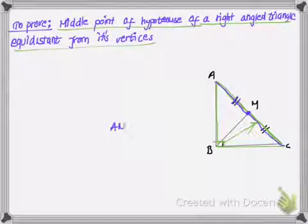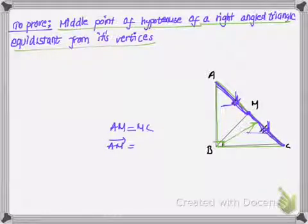So I can write AM is equal to MC. And if I consider the direction here from A to M, we see that it is pointing towards C. And if I consider MC, these two have the same direction. So I can write vector AM is equal to vector MC as well.